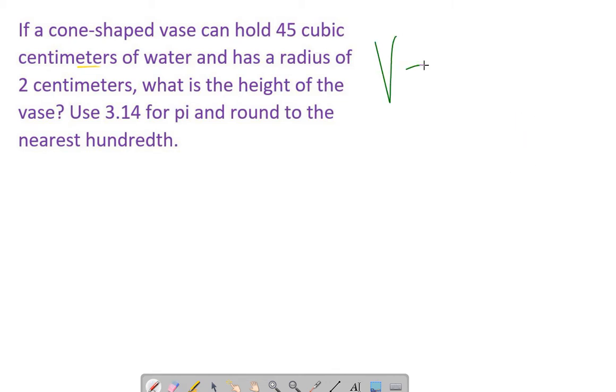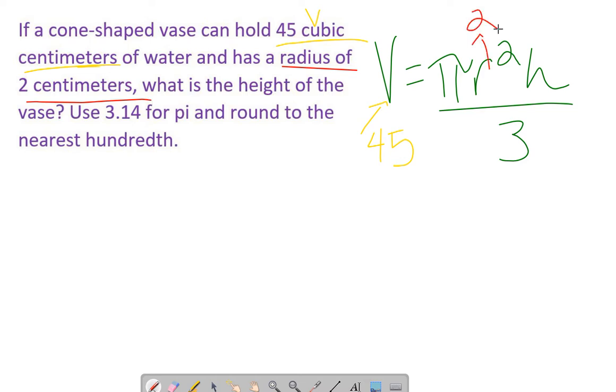So we've got volume equals πr²h divided by 3. Now let's see what information they gave us. They told us it could hold 45 cubic centimeters. That's capacity. Anytime it's capacity, that's our volume. So volume is 45. They gave us a radius of 2 centimeters, so r equals 2.